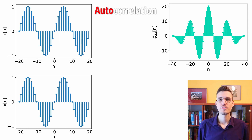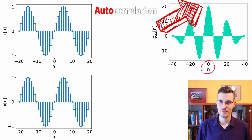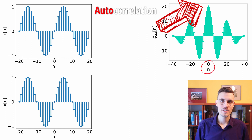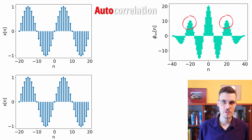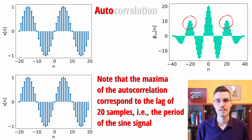Autocorrelation measures self-similarity of a signal. As you may guess, this self-similarity is highest if there is no shift in samples, but other peaks of the autocorrelation function can help us determine, for example, the periodicity of the function at hand. It is also used in music information retrieval — for example, when we want to estimate the tempo of a music piece that we're analyzing.